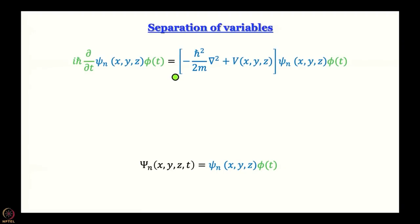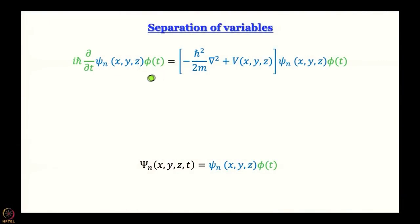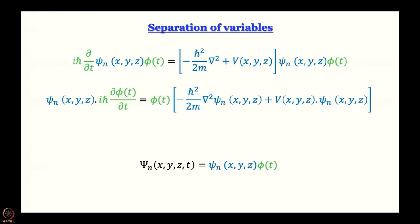Not only do the wave functions have space and time-dependent parts, but the operators also have one time-dependent and one space-dependent form. The time-dependent operator iℏ ∂/∂t acts only on φ(t), and the space-dependent operator acts only on the space-dependent part. From the left-hand side we can take ψₙ(x,y,z) out, and on the right-hand side we can take φ(t) out. Note that n here is just an identifier for the particular wave function, not a quantum number.